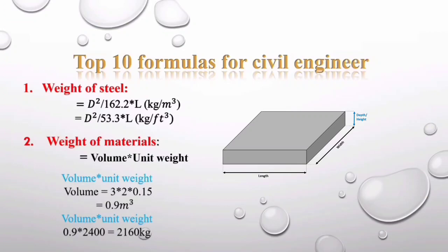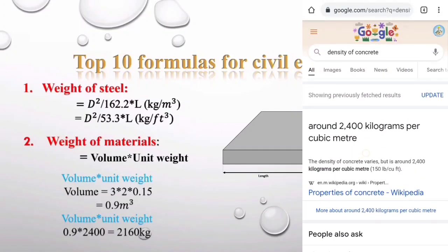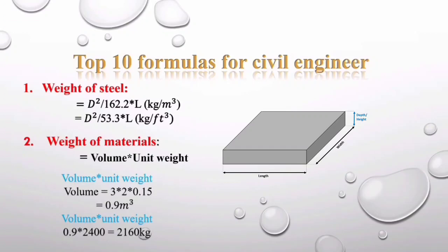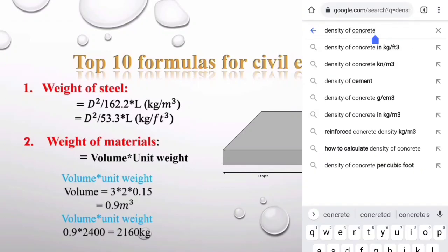Volume is a three-dimensional quantity obtained from length × breadth × height (or thickness). Assume the slab length is 3 meters, breadth is 2 meters, and thickness is 0.15 meters. So volume = 3 × 2 × 0.15 = 0.9 cubic meters. Now multiply by density. The density of concrete is 2400 kg per cubic meter, so 0.9 × 2400 = 2160 kg — that is the weight of the slab.